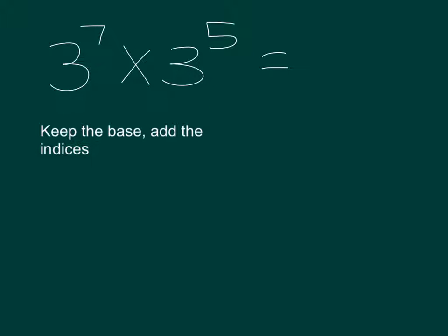So we go 3 times 3, we keep the base, we add our indices, so 7 plus 5 is 12, so therefore our answer is 3 to the power of 12. Let's do another one.